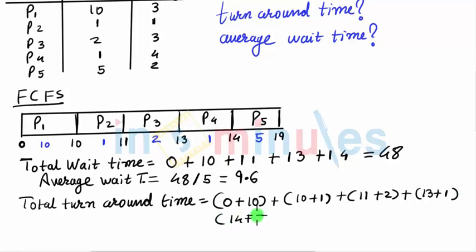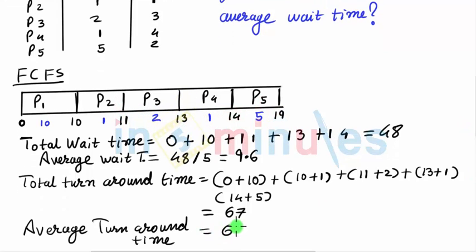For P5, it waited till 14 and added with 5. If we solve this, we have 67. Average turnaround time would be 67 by 5, which equals 13.4.